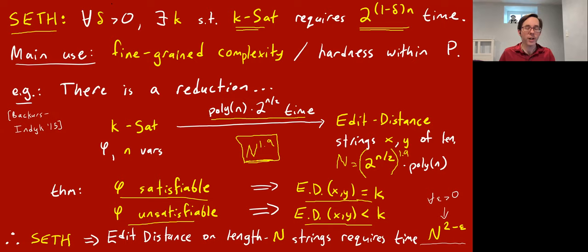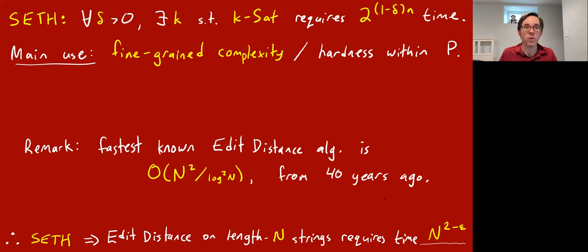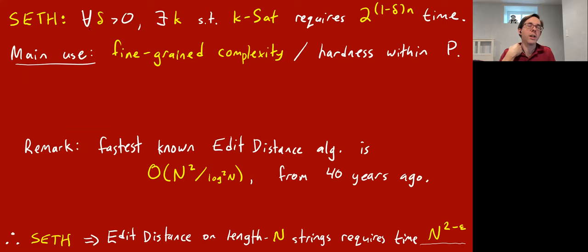If you assume SETH, which is a very strong assumption, you get that edit distance cannot be solved in subquadratic time. Trying to solve edit distance in subquadratic time is a problem that's been intensively studied for over 40 years. The fastest algorithm is like n² / log²n. That's an awesome development in algorithms theory over the last five years. It raises the question of how much we believe SETH — it's a very strong assumption. Some experts say they believe ETH but not strong ETH, but I believe strong ETH. We don't know any algorithms that contradict it; it seems pretty hard.